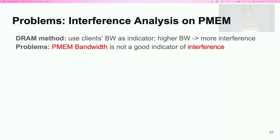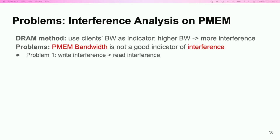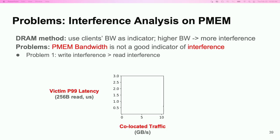DRAM interference analysis was straightforward. Prior works usually use each client's bandwidth as an indicator, assuming clients with high memory bandwidth will cause more interference. However, bandwidth as an indicator does not work on today's PMEM devices. For example, writes can cause much more interference than reads in PMEM, even with the same bandwidth. In the figure here, we show the tail latency of a victim read client with varying amounts of interference traffic co-located with it.